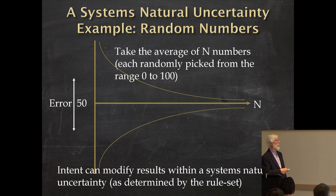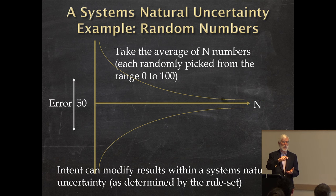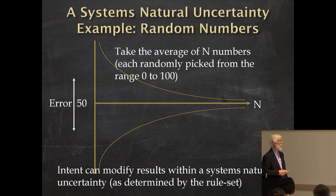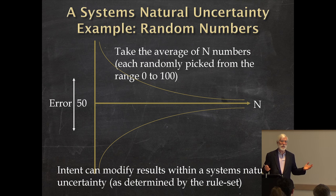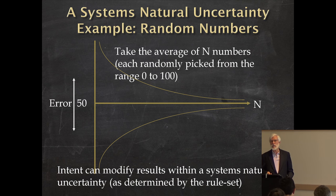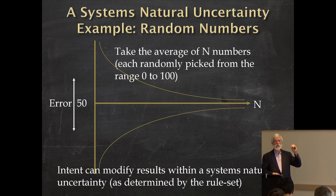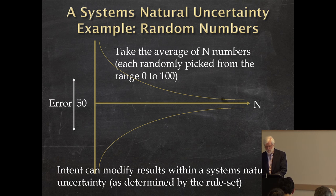Intent can only modify within the natural error. People doing experiments want to use a lot of numbers because that makes very concise data — less randomness in the average. But they find they can only make tiny little differences. With fewer numbers you can make much bigger differences, but it looks like it could just be luck because results jump around. That's plausible deniability either way: with few numbers a big change could be luck; with many numbers the change is only in the fifth decimal place.